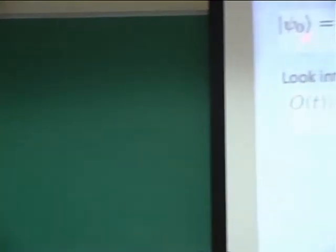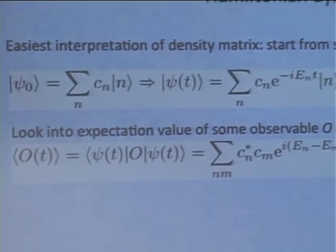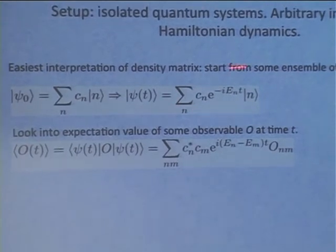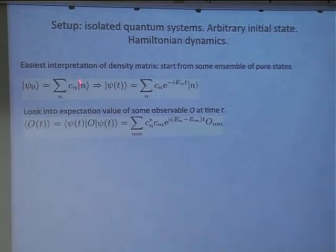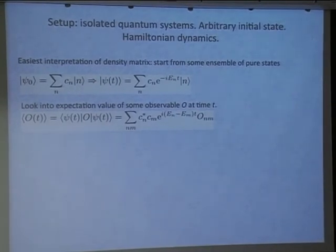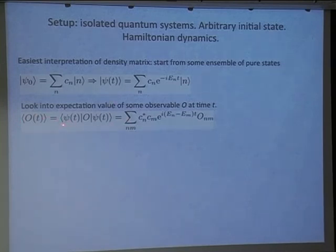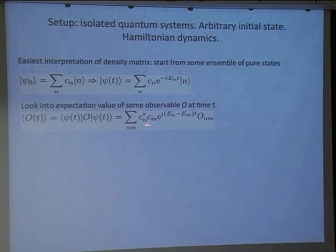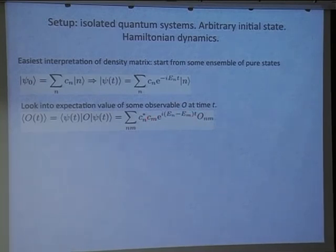Let me assume we start each experiment from a pure state, which evolves with some Hamiltonian. I can always write this state in the eigenbasis of my Hamiltonian — then evolution is trivial. I'm interested in the expectation value of some observable (a Hermitian operator). Writing the expectation value and plugging in the eigenstate expansion, I get a double sum over n, m of coefficients c_n* c_m, oscillating exponentials, and the matrix element.